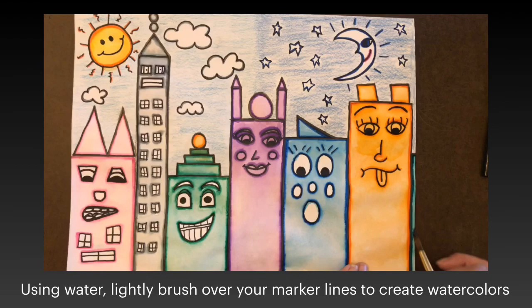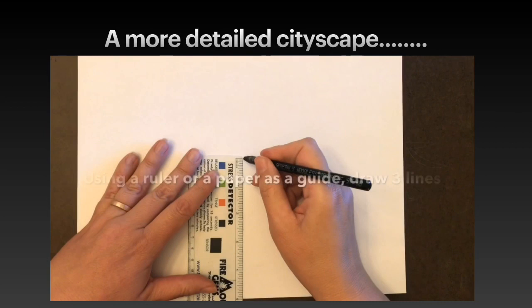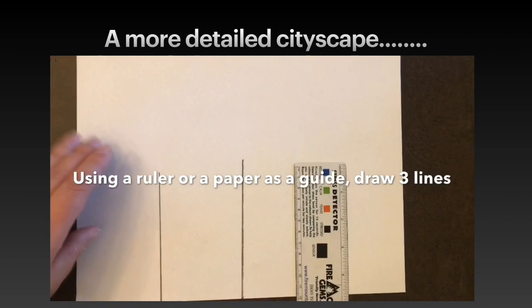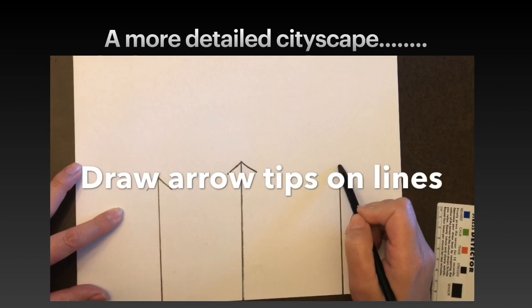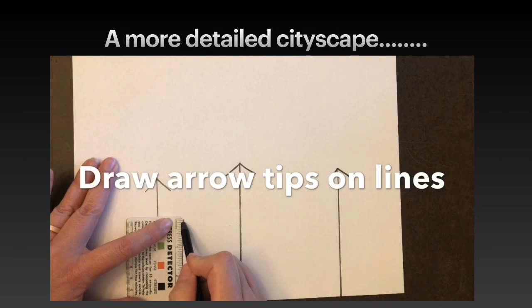Now we're going to draw a more detailed cityscape. Using a ruler or the side of a paper, draw three straight lines, then add arrow tips on those lines. After that, add three to four more lines of varying heights, also with the arrows on top. These lines will be the beginning of your city buildings.